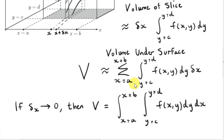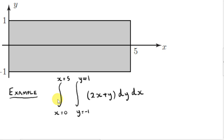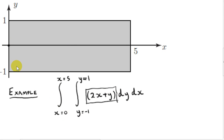I may give more rigorous justifications for this process in other videos, but for now we'll just discuss applying this method. Let's look at this example. We want to get the double integral of the function 2x plus y from x equals 0 to x equals 5, and y equals minus 1 to y equals plus 1 — the volume between this surface and this rectangular region of the xy plane. The z-axis is going into or out of the screen. Here's the origin, and the region runs from x equals 0 to x equals 5, and from y equals minus 1 to y equals plus 1.